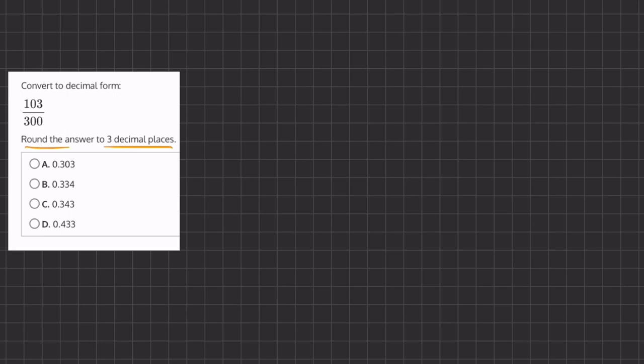Okay, so we're going to take this 103 and we're going to rewrite it as 3 plus 100. We're going to keep our denominator of 300 the same. So we can rewrite this fraction into 3 over 300 plus 100 over 300.